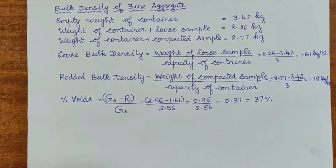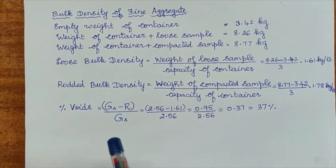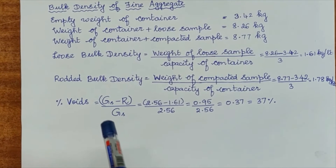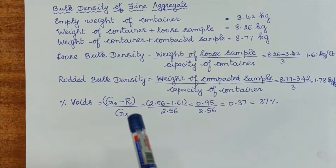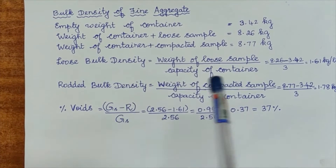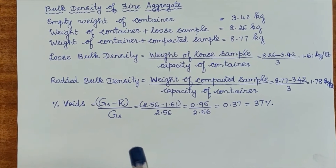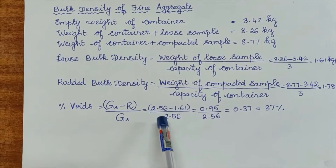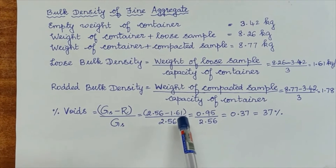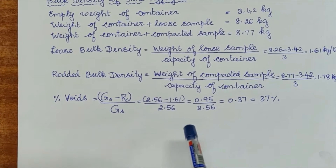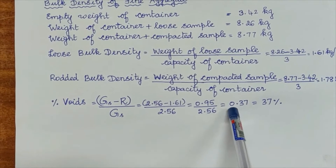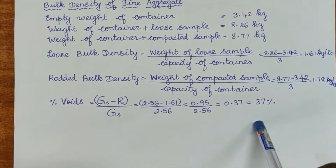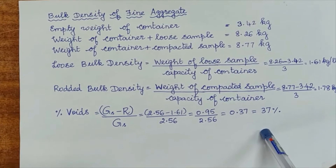For determining the percentage of voids present in the sample, the formula is (Gs minus R) divided by Gs, where Gs is the specific gravity of the sample and R is the loose bulk density. From the previous experiments, we got the specific gravity of the sample as 2.56. The loose bulk density is 1.61, which is divided by 2.56, giving a value of 0.37. Multiplying by 100, we get 37% as the percentage of voids present in the sample.